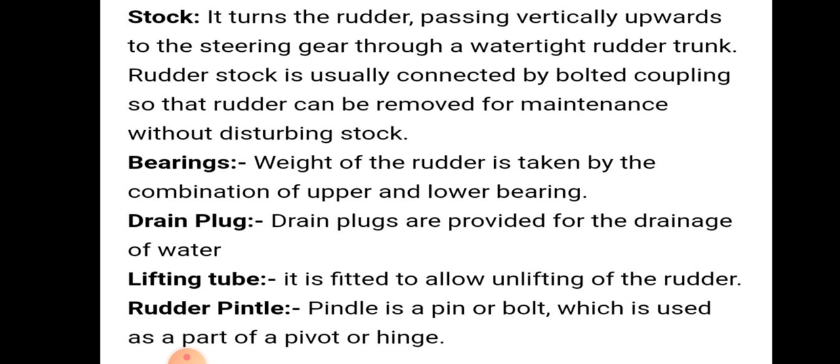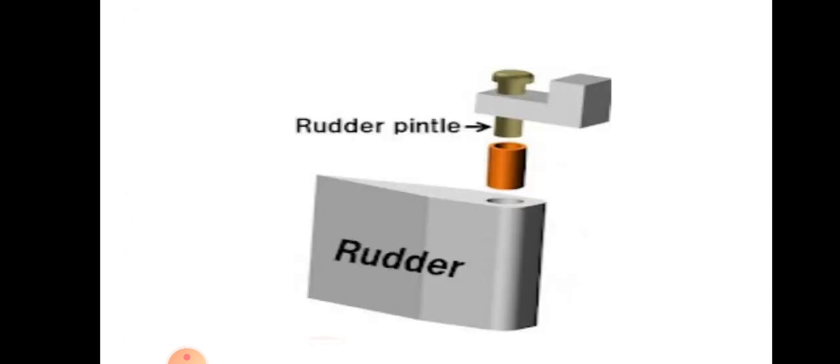Bearings: the weight of the rudder is taken by the combination of upper and lower bearings. Drain plug: these are provided for drainage of water. Lifting tube: it is fitted to allow unlifting of the rudder. Rudder pintle: a pintle is a pin or bolt which is used as part of a pivot or hinge.